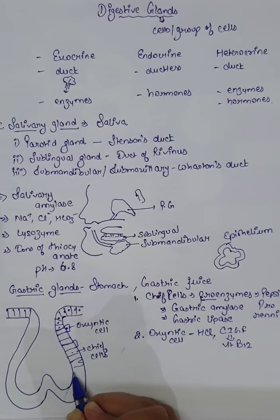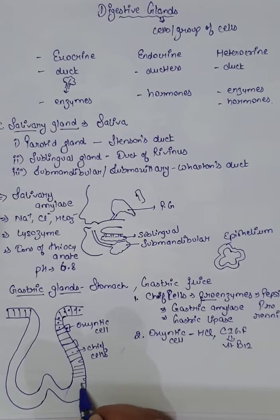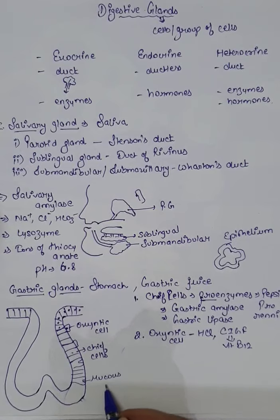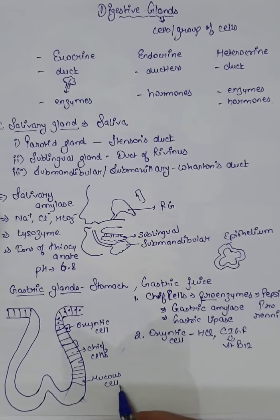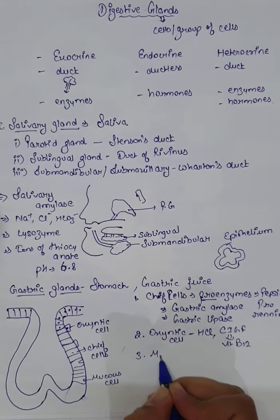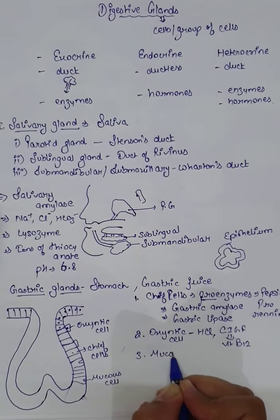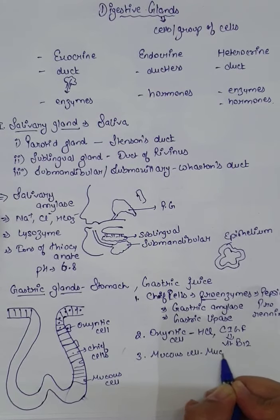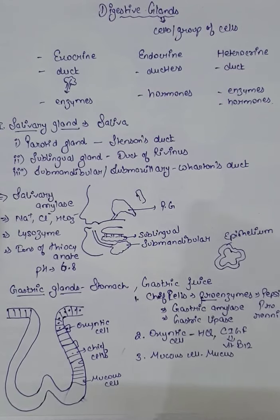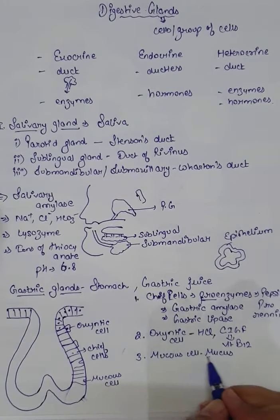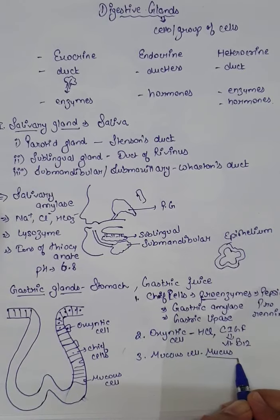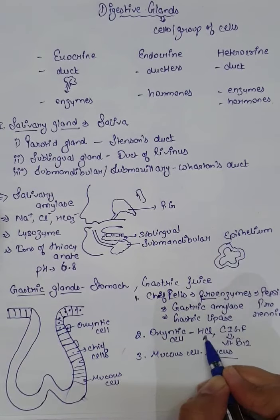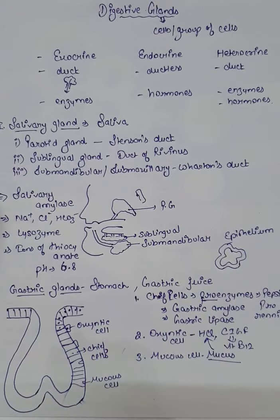Mucus cells are also present in the gastric glands. As the name suggests, mucus cells are responsible for the secretion of mucus. The function of mucus is to protect our stomach walls from the action of HCl.